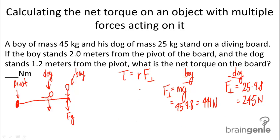Now all we're going to do is apply the rest of the formula. So we have tau equals R times the perpendicular component of force. That's going to be equal to 2.0 times 441 for the boy, and 1.2 times 245 for the dog.